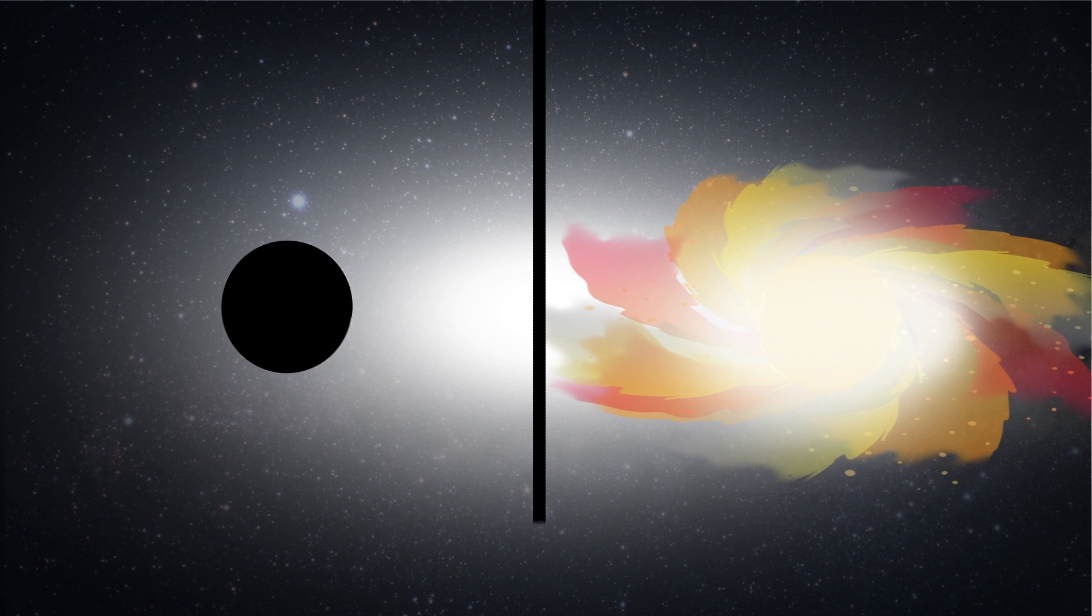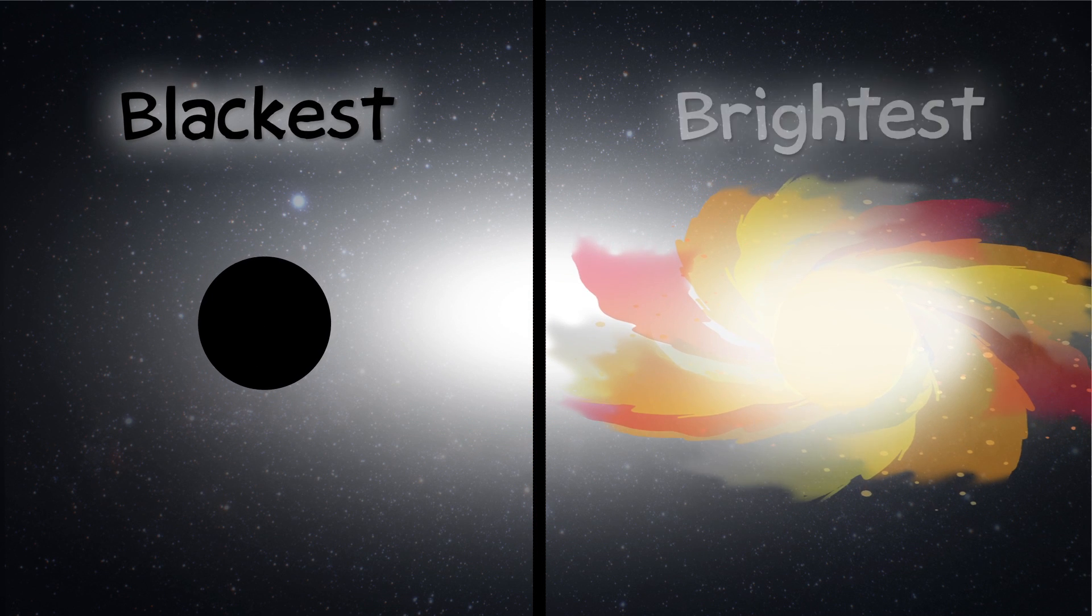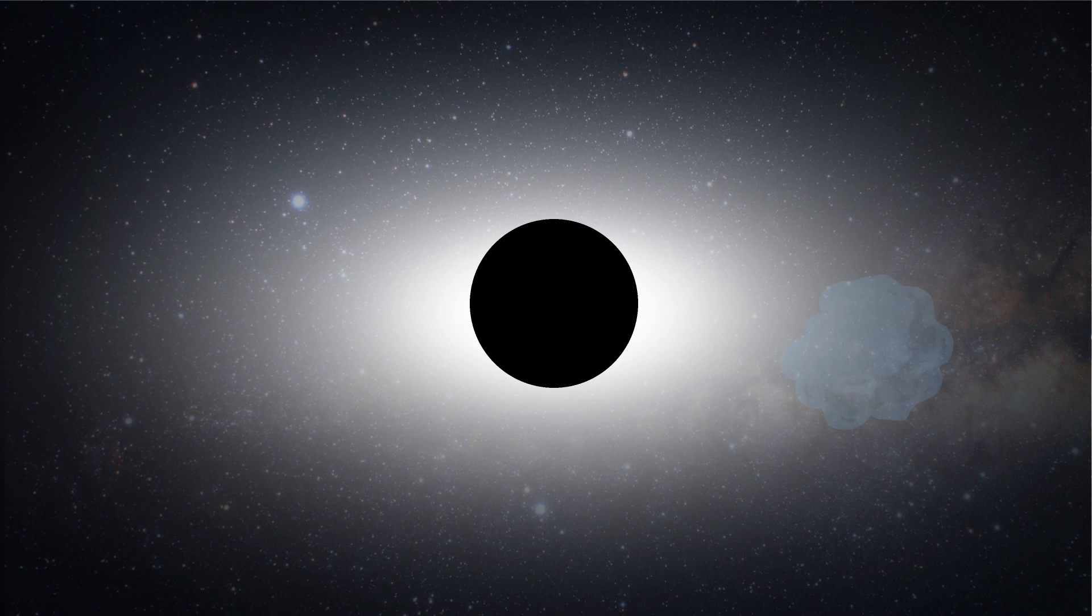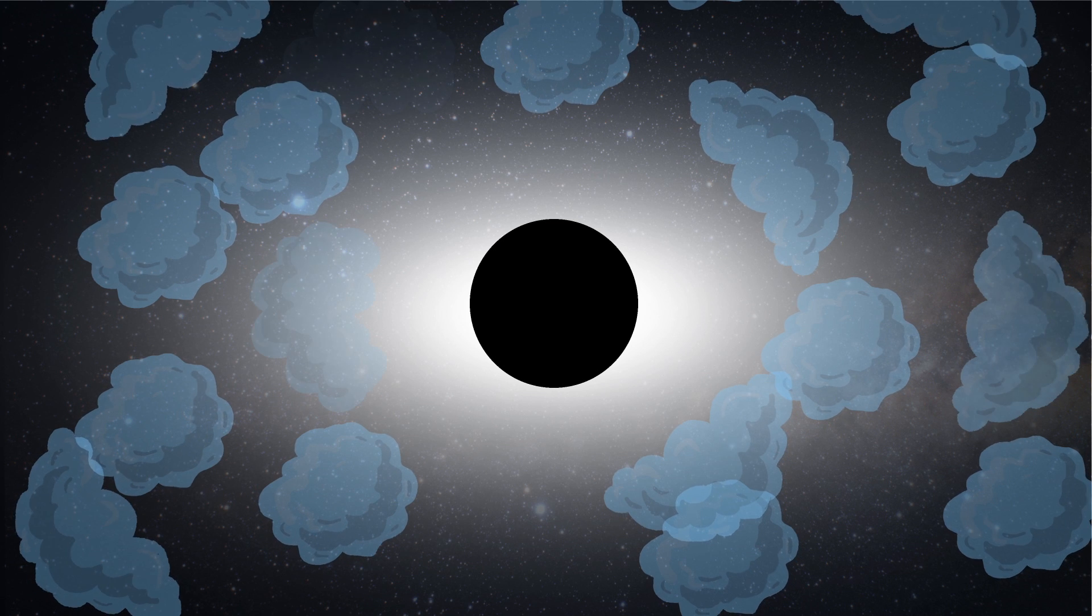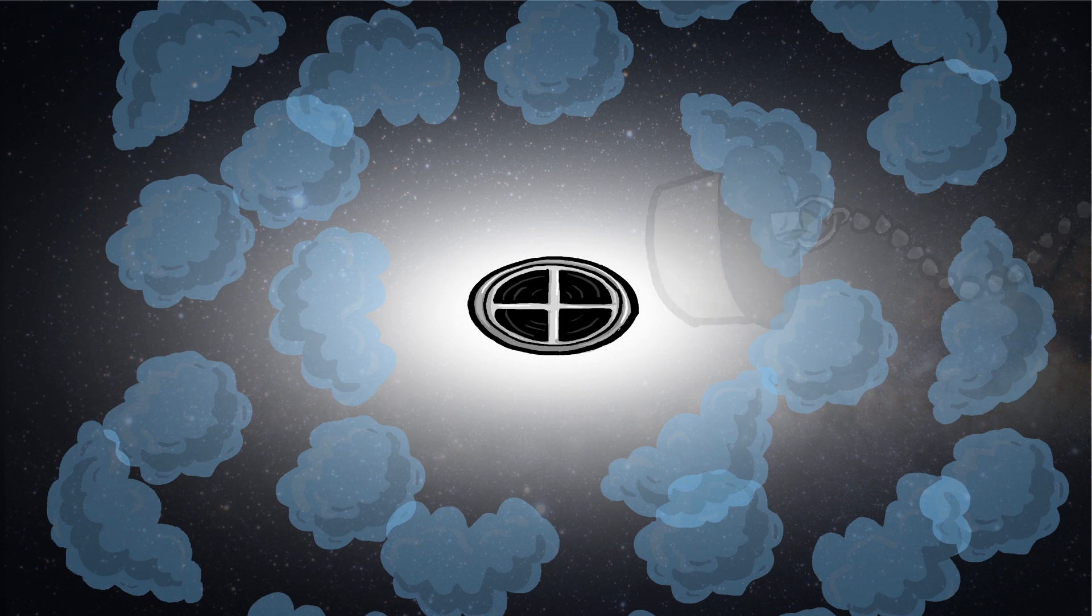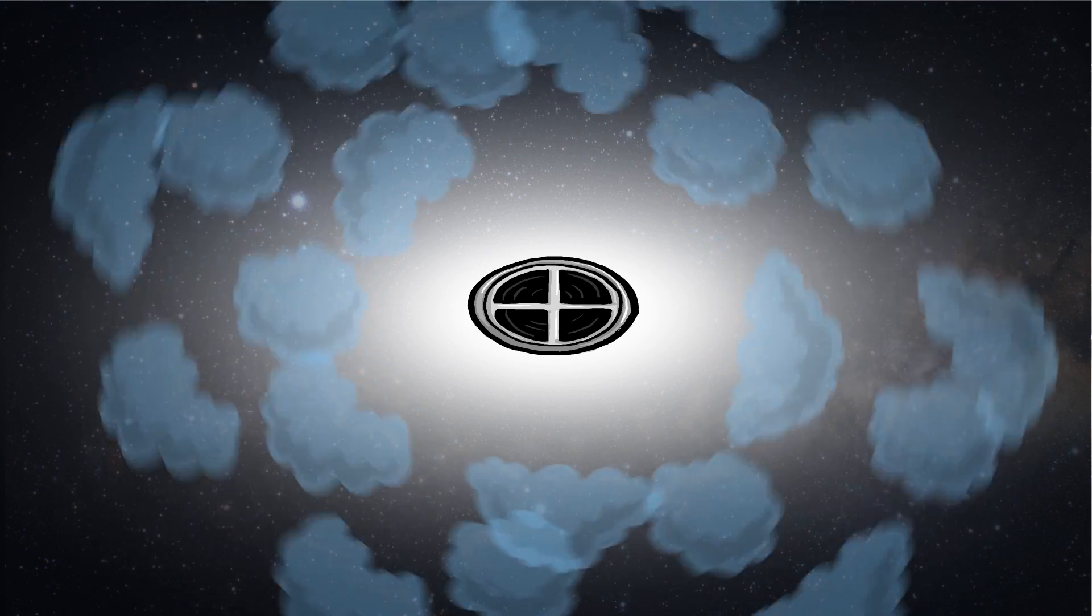The biggest paradox about black holes is that they're the blackest things in the universe, but they're also some of the brightest things in the universe. And that's because when you have a black hole and some gas is being gravitationally pulled towards it, the gas doesn't just fall straight in. Just like if you fill up your bathtub with water and you pull the plug, the water doesn't just fall straight down the drain. It kind of swirls around and then goes in.